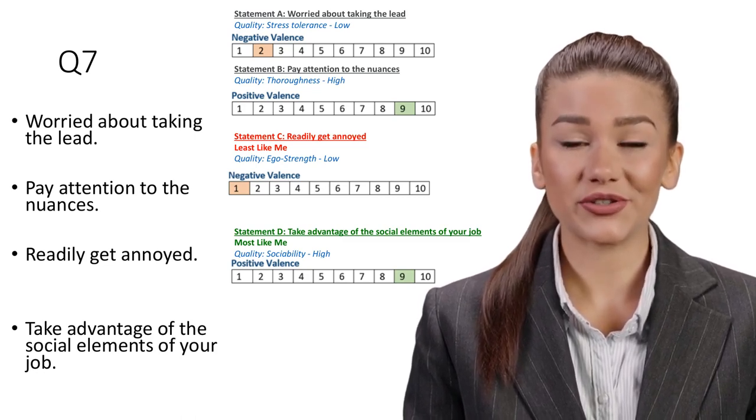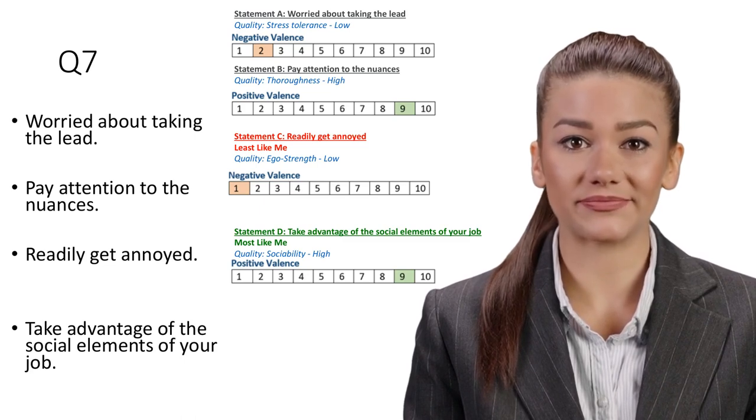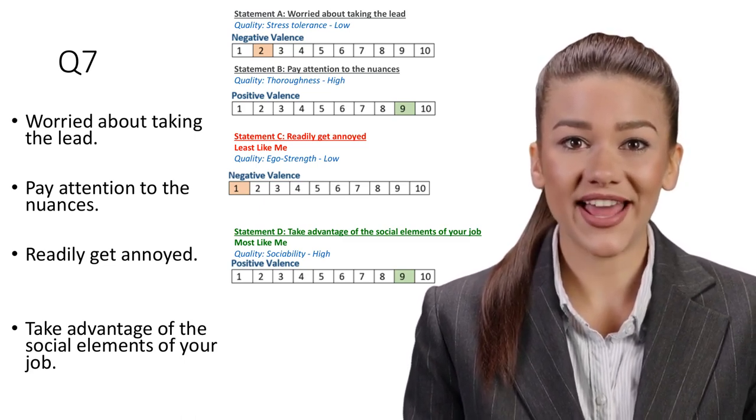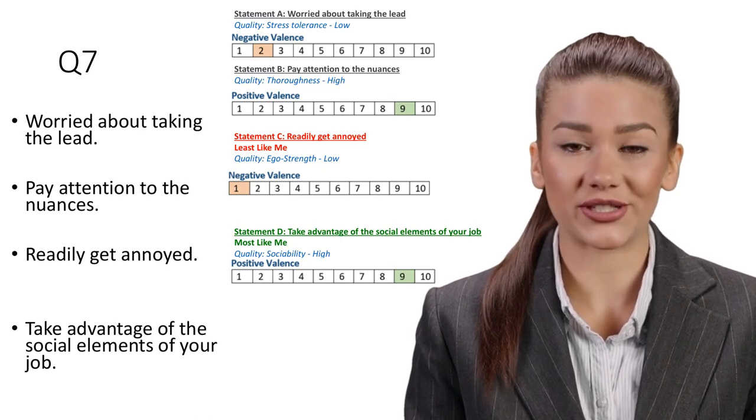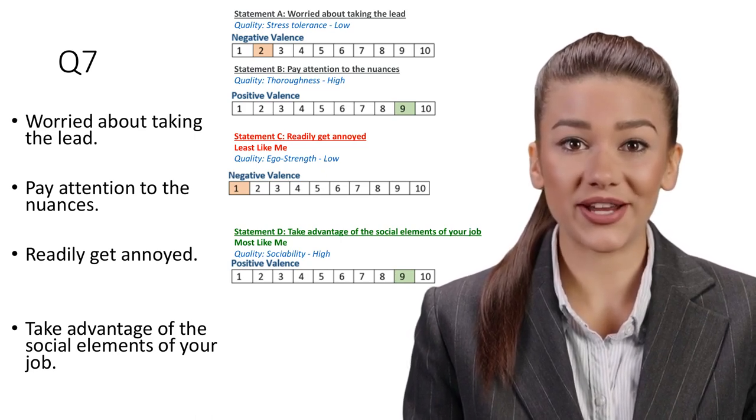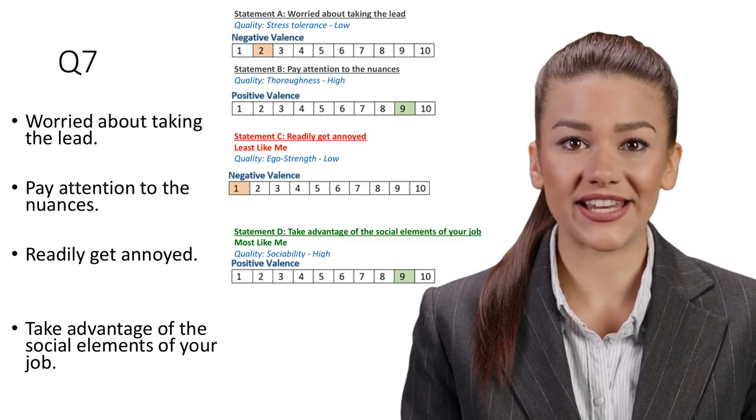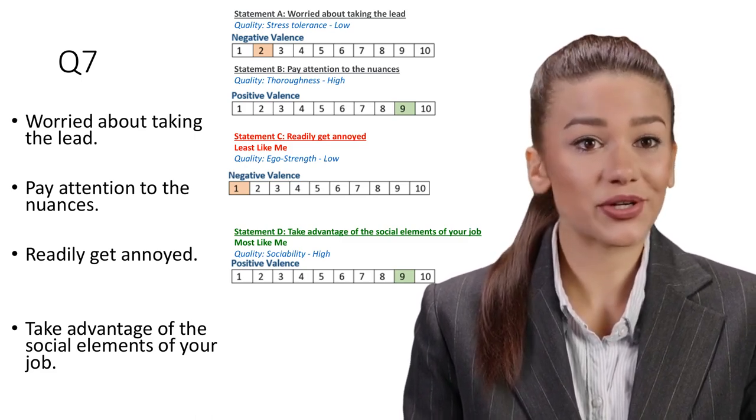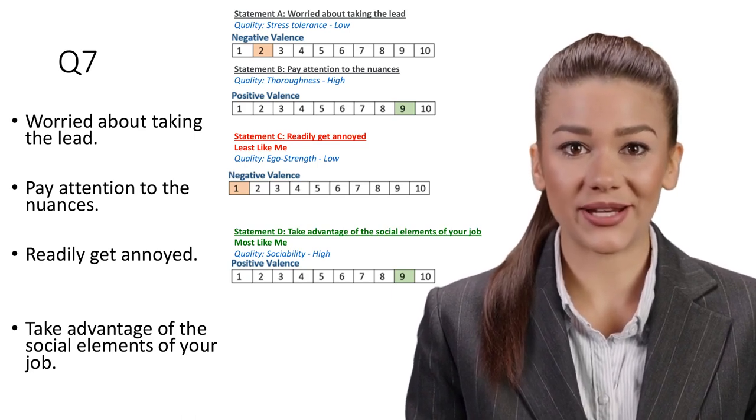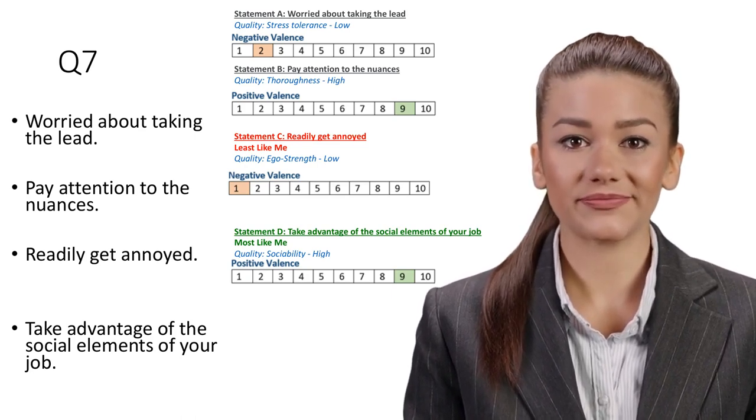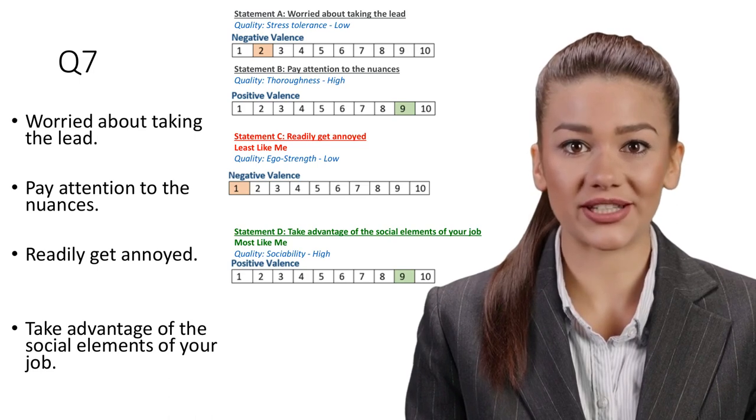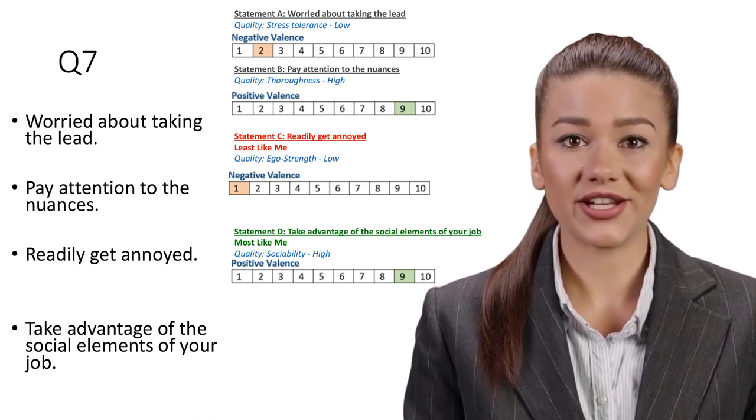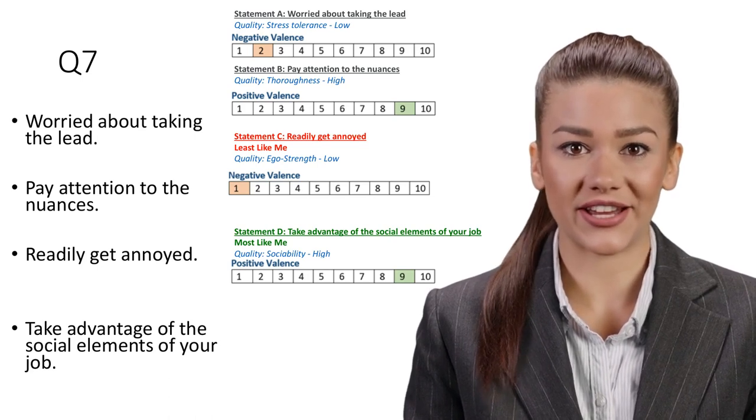Statement D: Take advantage of the social elements of your job. Most like me. Quality: Sociability, High. Work relationships are incredibly important to employee well-being. It's about more than just getting along with co-workers. Robust social connections make people happier and more fulfilled, which translates into more reliable and strong work performance. Assessors highly value the sociability trait. Sociability, this statement, is a highly valued trait which will be allocated points in other questions.